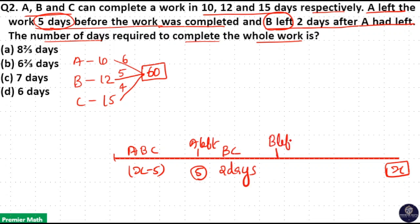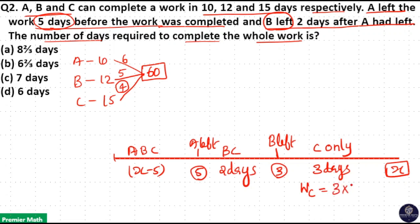B left 3 days before the work was completed, because B only worked for 2 more days after A had left. So the remaining is 3 days. Now A and B have left, so C alone worked for 3 days. Efficiency of C is 4, so work completed by C in 3 days is 3 × 4 = 12 units. Work completed by B and C in 2 days is 2 × (5 + 4) = 2 × 9 = 18 units.